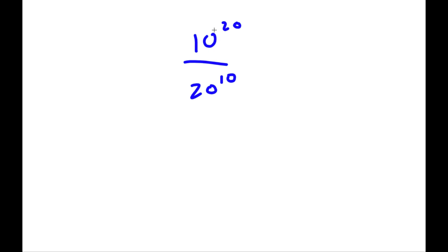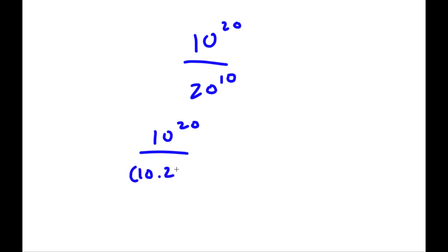Alright, so I have 10 to the power of 20 over 20 to the power of 10. Now 20 here is the same thing as 10 times 2, so now I have 10 to the power of 20 over 10 times 2 to the power of 10.